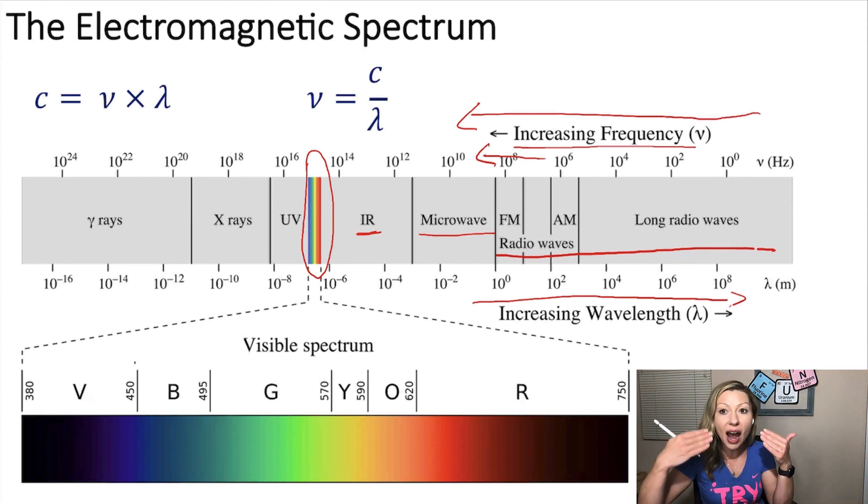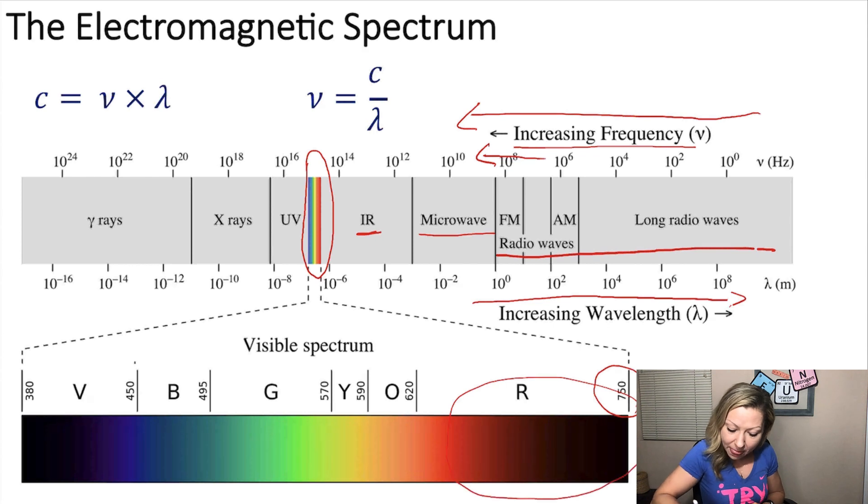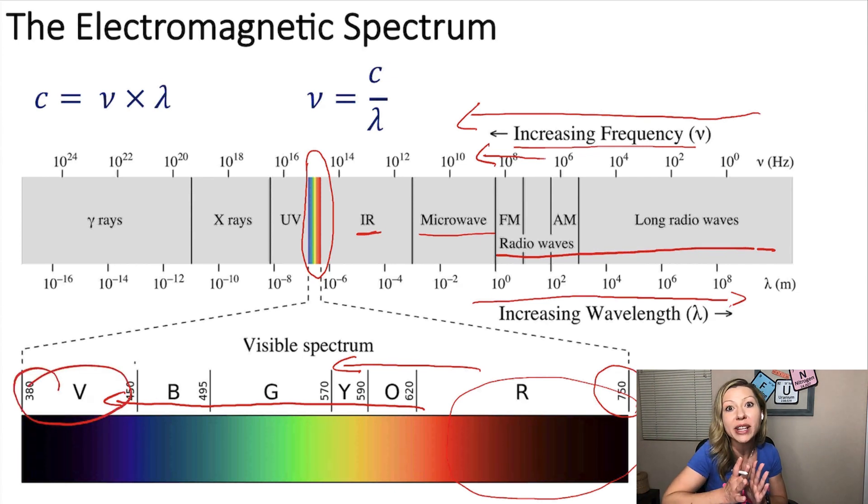And our eyes can detect the different wavelengths based on the different colors. So, red color has the longest wavelengths right here. And then, as we go to this direction, the wavelengths decreases. We go to orange, yellow, green, blue, and at the end, violet, which has the shortest wavelengths.